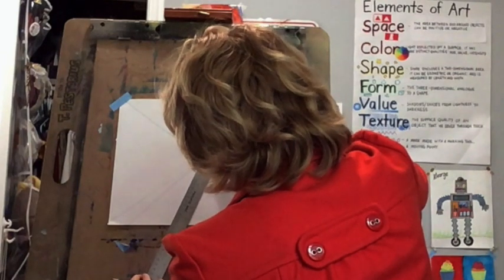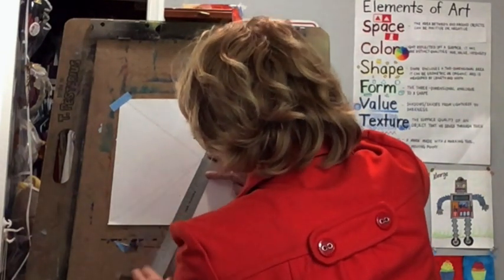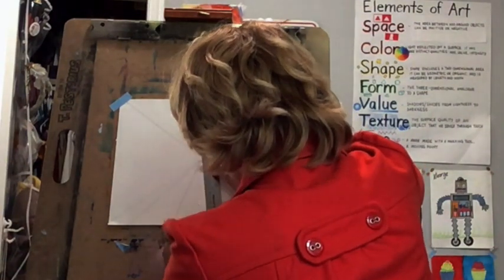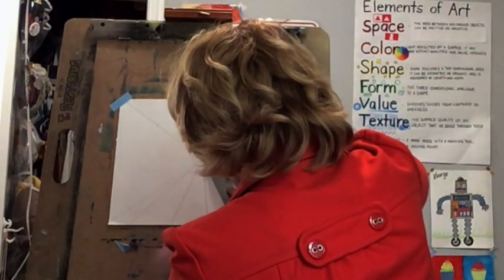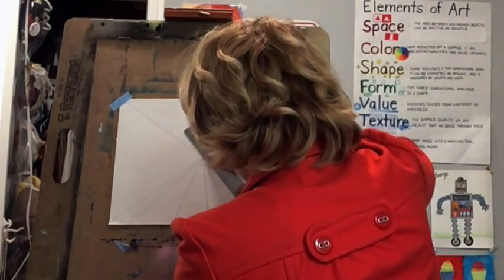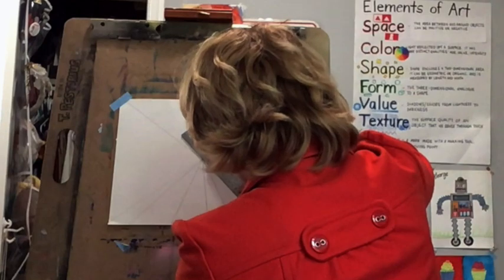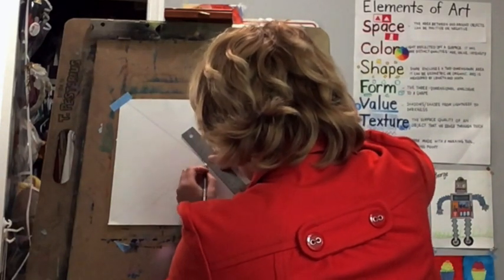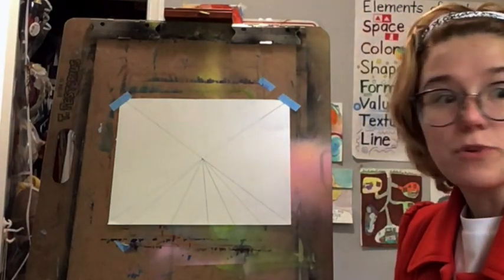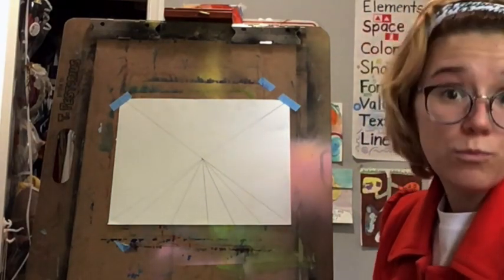And all of these lines are coming from that center vanishing point. This part is very important. All of the lines should come from the center vanishing point. When I'm drawing these lines at least. So there are some lines from the center vanishing point.